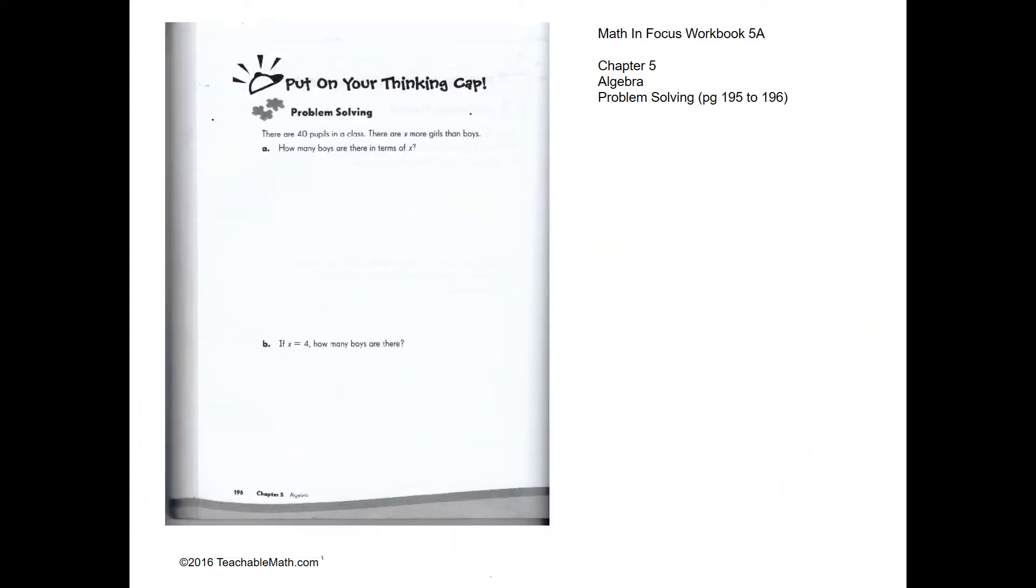Problem solving. So there are 40 pupils in the class. There are x more girls than boys. So how many boys are there in terms of x? So let's try bar modeling. So we have boys and we have girls. So there are more girls than boys. And how much more? x number more.